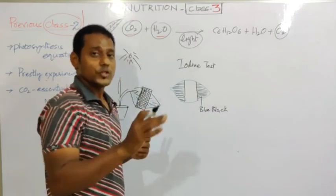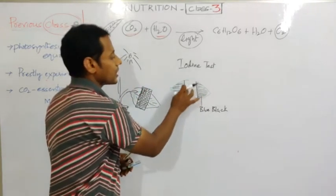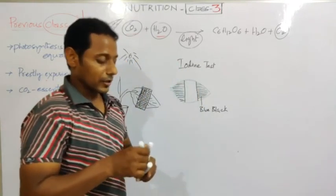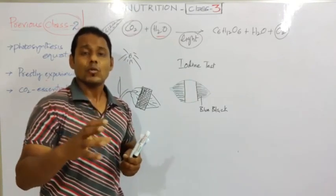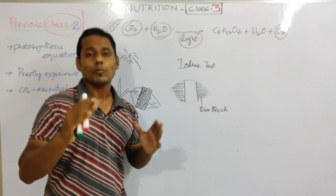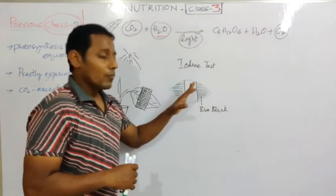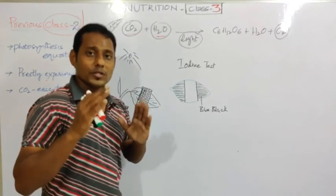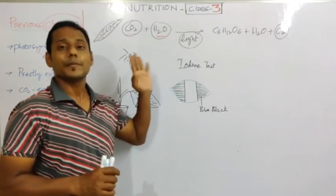Light is essential. Where light did not reach - the covered part - starch was not formed, so iodine does not give a blue-black reaction. That is why we get a white or no-color result in the covered area. This experiment proves that light is a very essential factor or material for the process of photosynthesis in order to prepare starch in the leaves or plants.